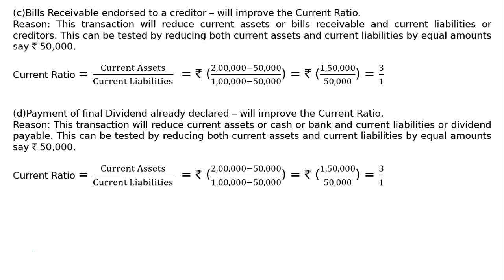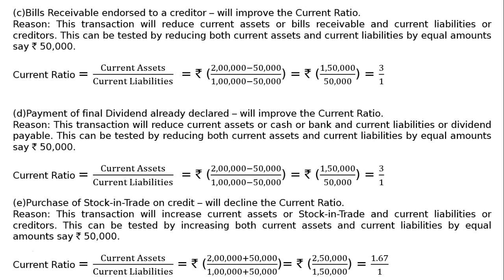Part E: Purchase of stock in trade on credit will decline the current ratio. Reason: this increases both current assets (stock in trade) and current liabilities (creditors). Tested by increasing both by Rs. 50,000: Current ratio = (Rs. 2 lakh + Rs. 50,000) / (Rs. 1 lakh + Rs. 50,000) = Rs. 2,50,000 / Rs. 1,50,000 = 1.67:1. Since 1.67 is less than 2, the ratio declines.